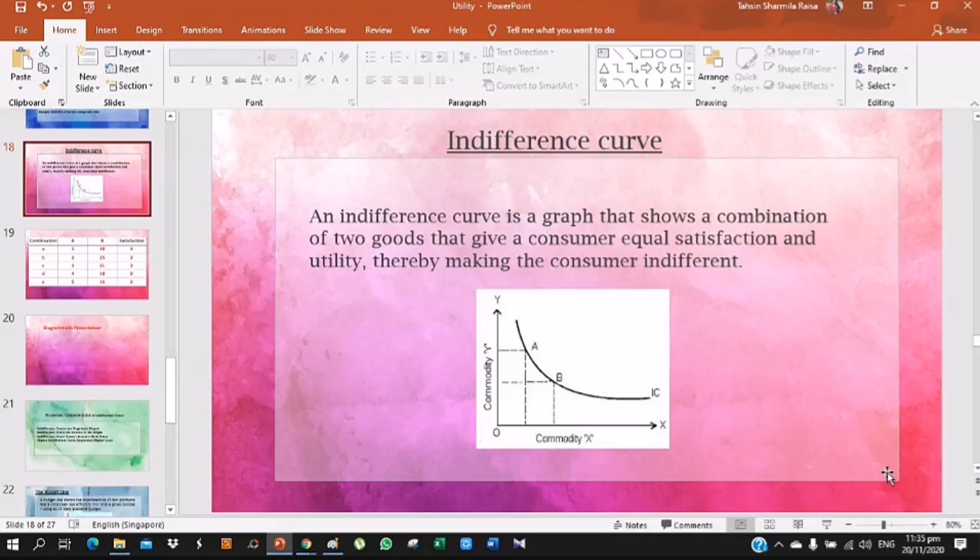Two goods, suppose apple and orange. There are various combinations - more apple less orange, or less apple more orange. The consumption provides the same satisfaction.